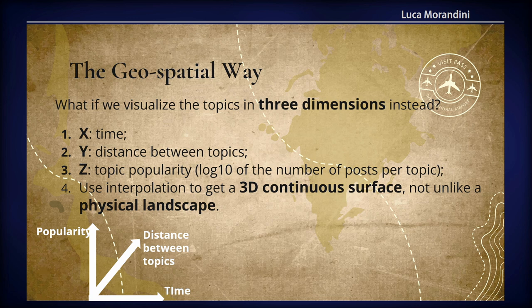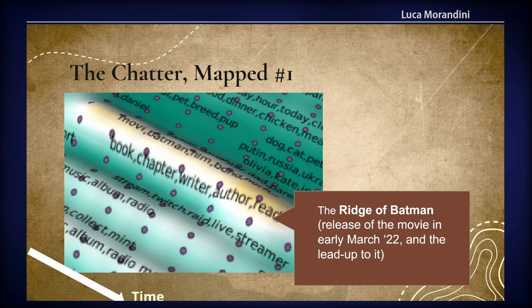You interpolate that with a 3D continuous surface, and then you have something that resembles a physical landscape. For instance, this is the original Batman visualization — that over there is the lead-up to the release of the Batman movie. You can see topics like book, chapter, writer, and the one on the ridge is 'movie, Batman' — those are the top terms.